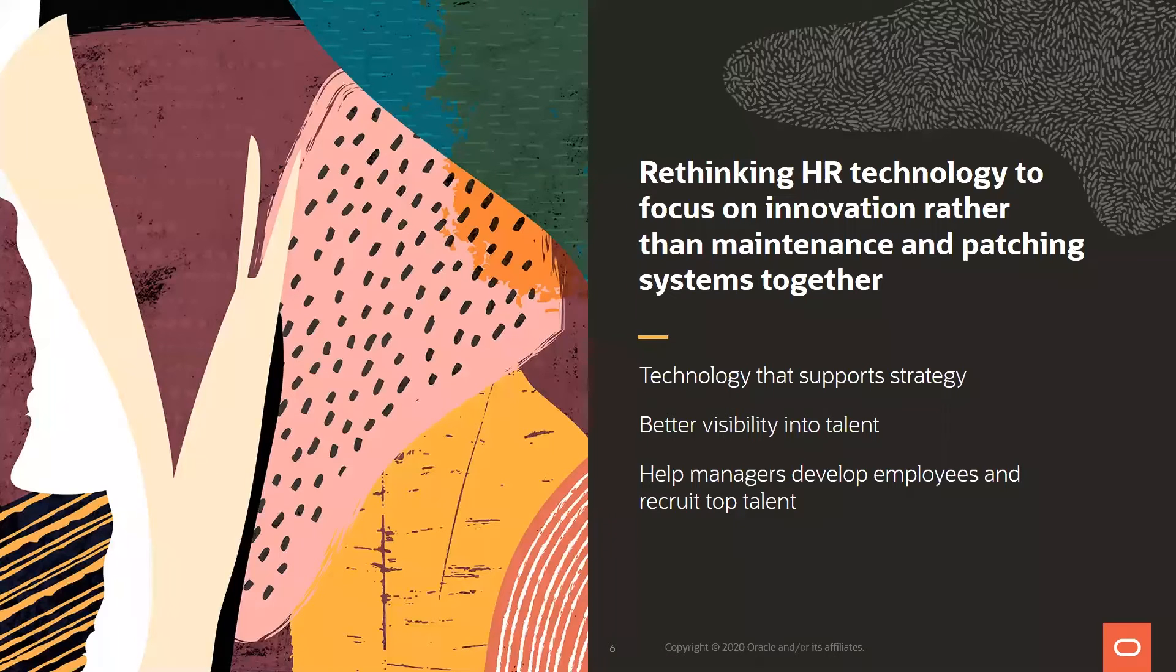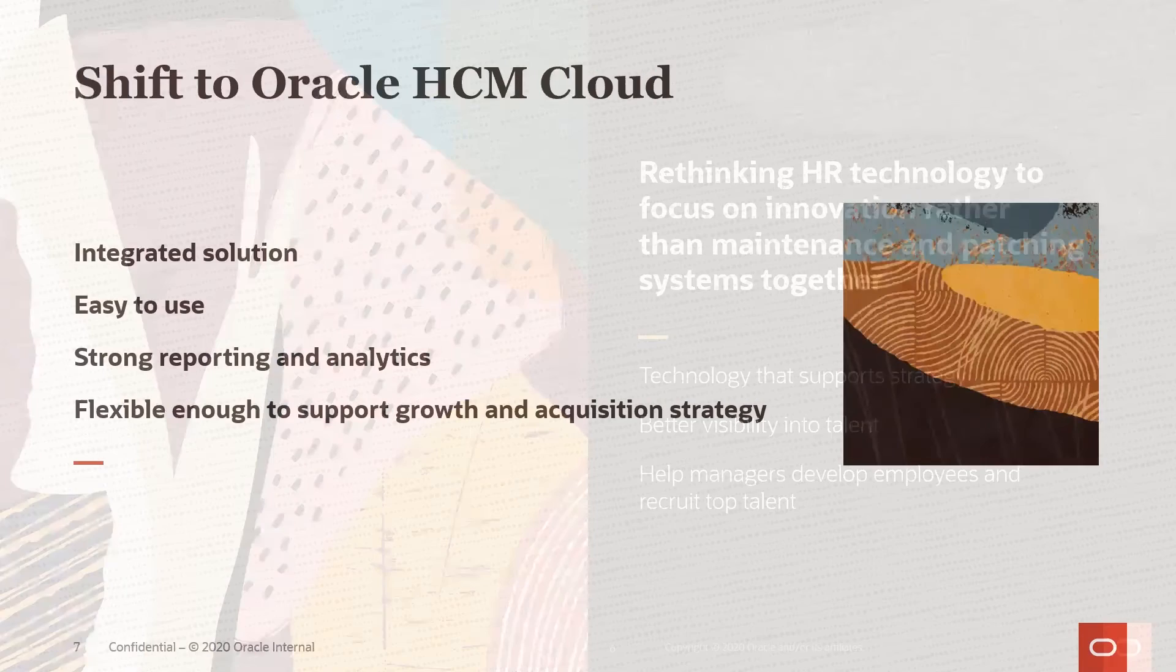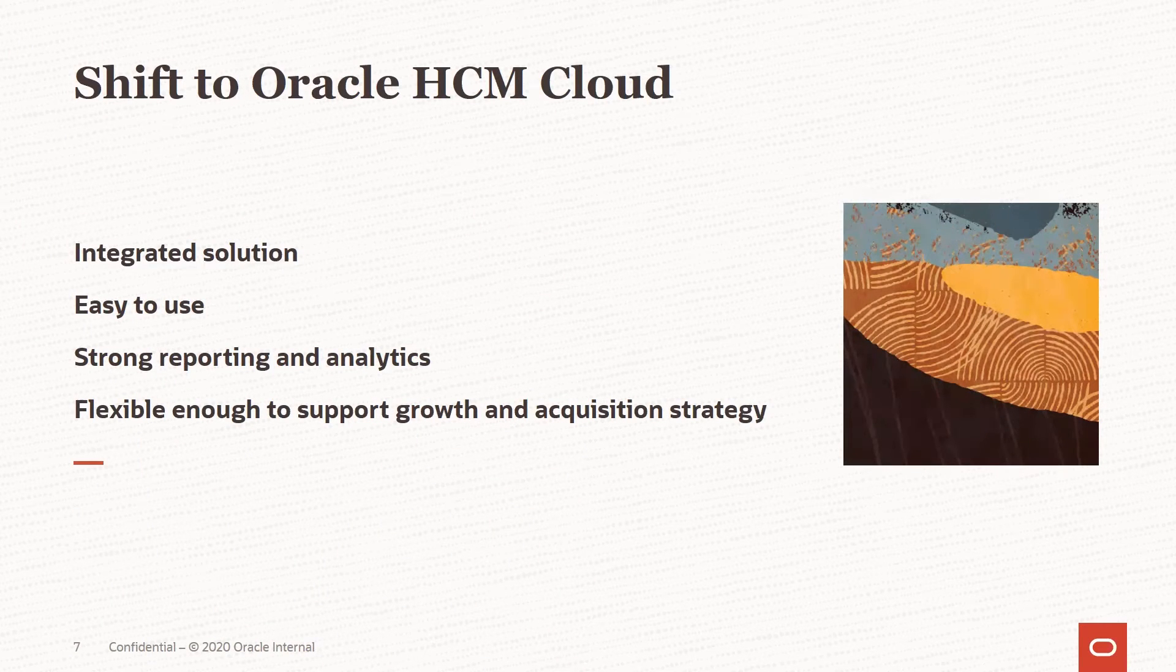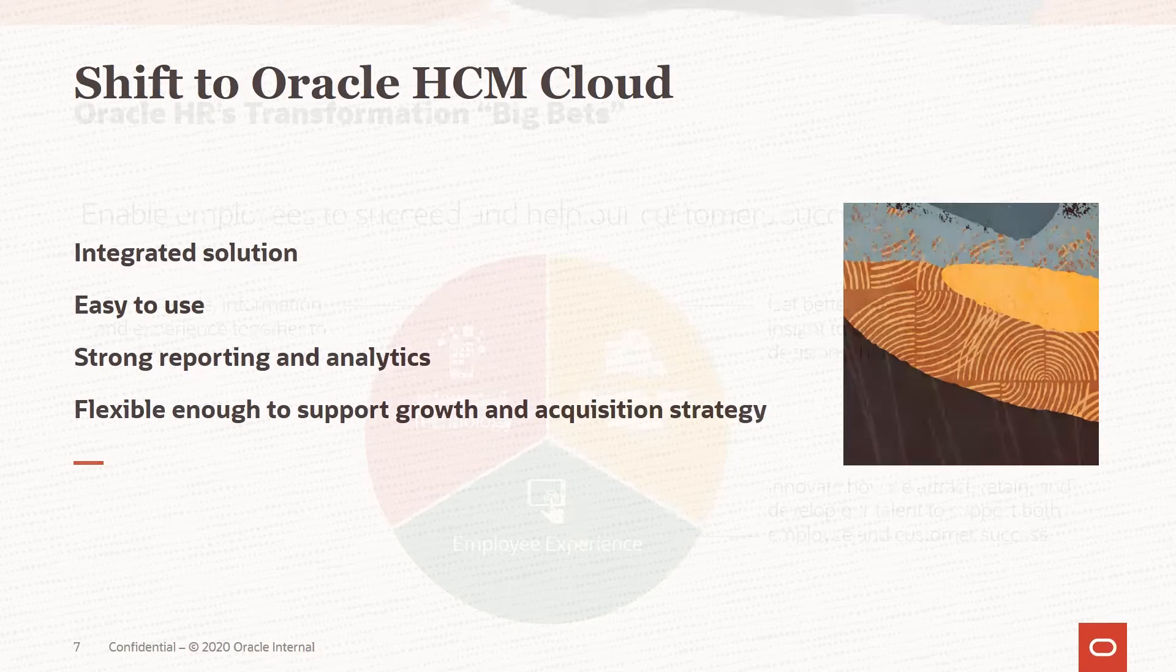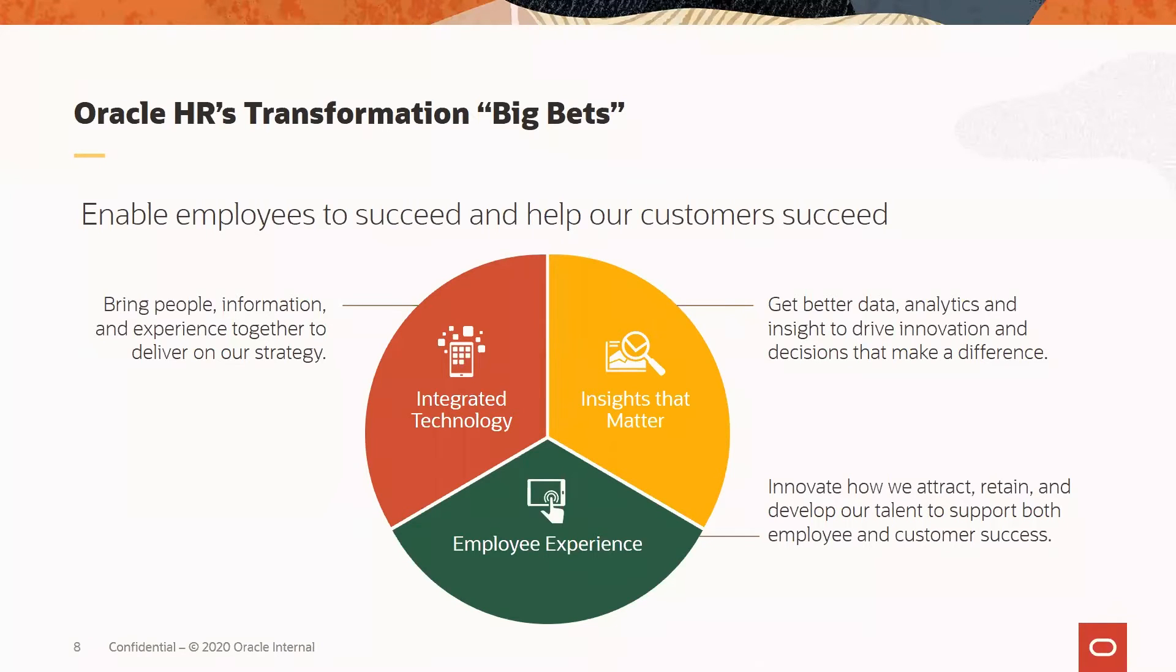We really were focused on this end state. And we also needed to help managers recruit top talent and provide them with the tools to develop that talent throughout their career at Oracle. So this was about shifting to the Oracle HCM cloud, and we upgraded our enterprise to the cloud, giving us an integrated set of solutions that scaled to meet the needs of our complex organization. We wanted it to be easy to use, to provide strong reporting and analytics, and make sure it was flexible enough to support our growth and acquisition strategy. I don't know if you guys know this, but we typically acquire on average of 12 companies a year. So that sort of inorganic growth is a really critical aspect of our systems infrastructure and being able to support that.